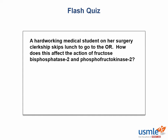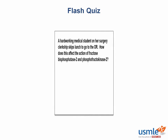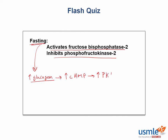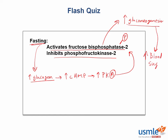Now let's take a shot at a flash quiz. A hard-working medical student is on her surgery clerkship and skips lunch to go to the OR. How does this affect the action of fructose bisphosphatase II and phosphofructokinase II? It's going to activate fructose bisphosphatase II and inhibit phosphofructokinase II. In the fasting state, you get increased glucagon levels, which increase cyclic AMP. This leads to activation of protein kinase A, which phosphorylates fructose bisphosphatase II, ultimately activating it. This will again limit glycolysis and increase gluconeogenesis to restore blood sugar homeostasis.